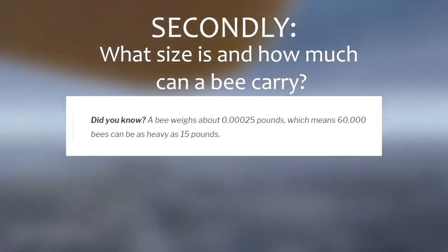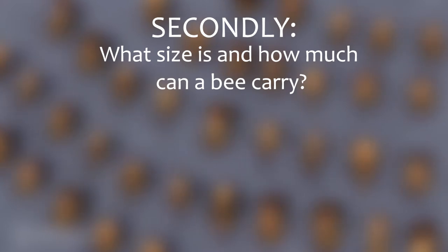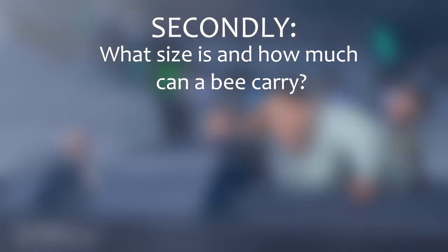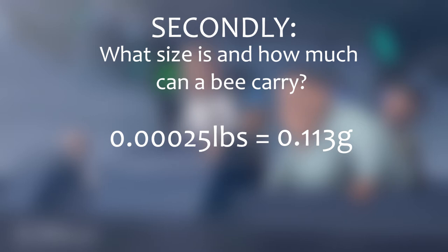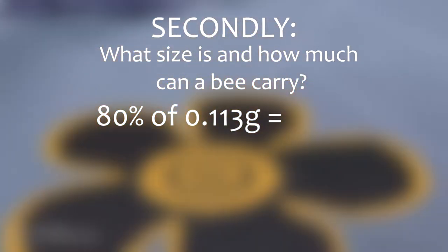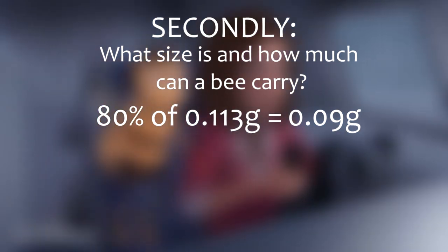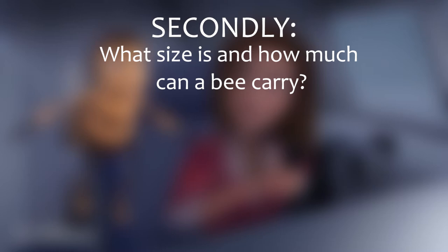An average bee weighs about 0.00025 pounds, according to schoolofbees.com. Because I want to use the superior metric system, that's 0.113 grams. 80% of 0.113 grams is 0.09 grams, which, to put into perspective, is equivalent to 90 grains of salt.